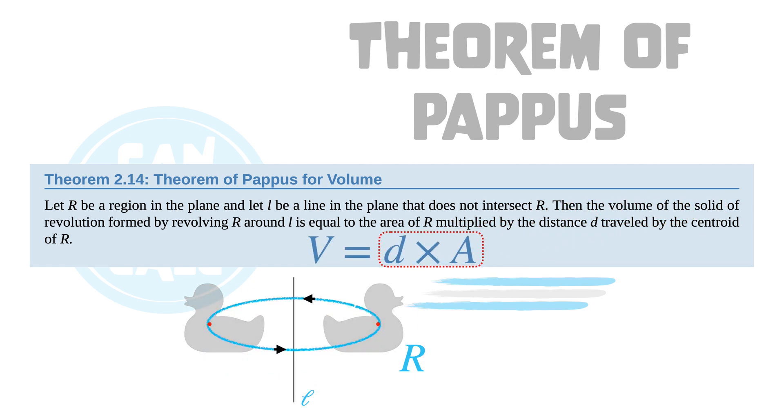The theorem is d times A provides the volume. What are these quantities d and A?